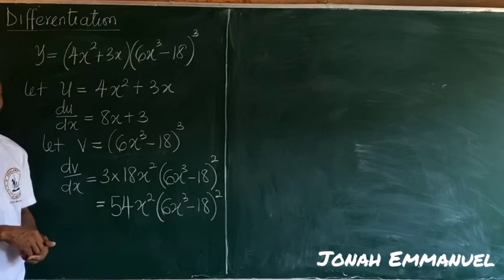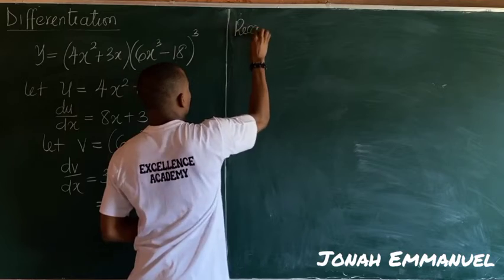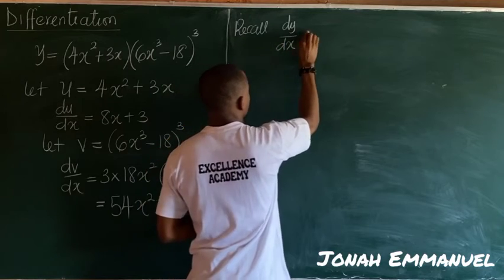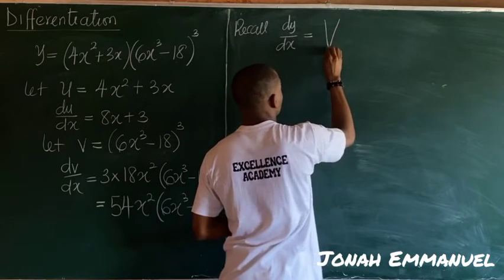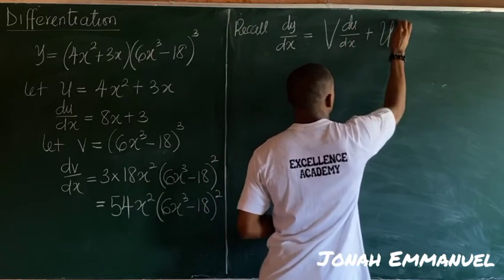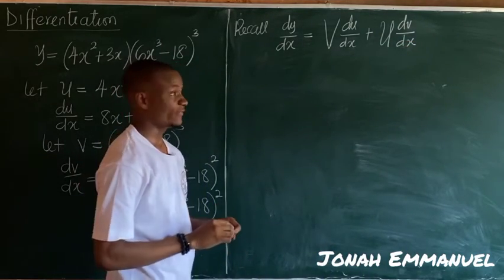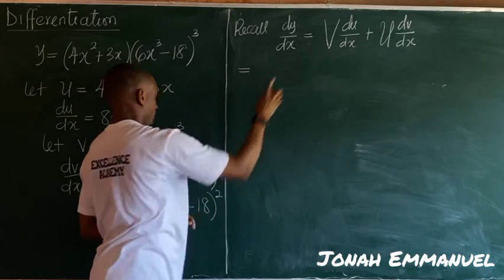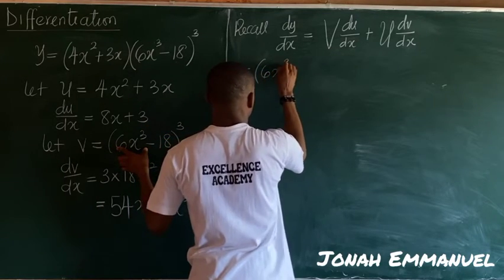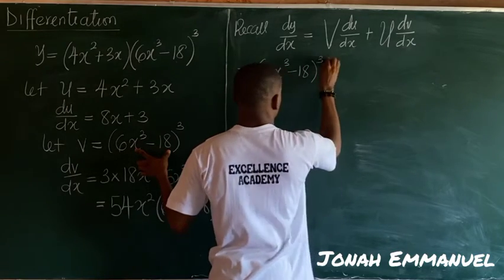Let's proceed. Please at this point now I'll recall my product rule formula. Recall that from product rule we said dy/dx is equal to v times du/dx plus u times dv/dx. At this point substituting values is now equal to, we have v. v from here is equal to this, so it gives you 6x cubed minus 18 all to the power 3. So here is v into du/dx. du/dx here is equal to 8x plus 3.